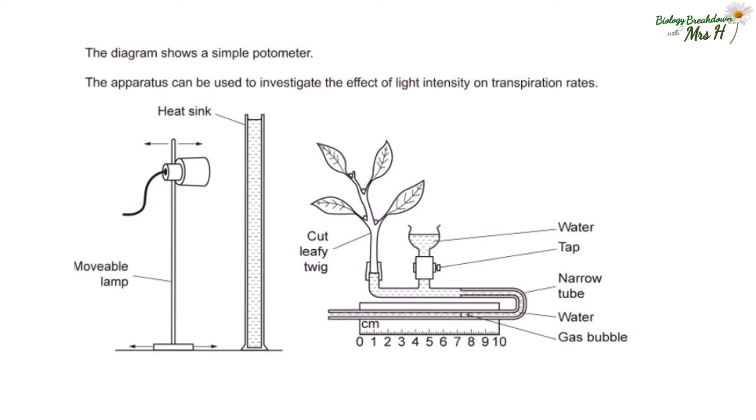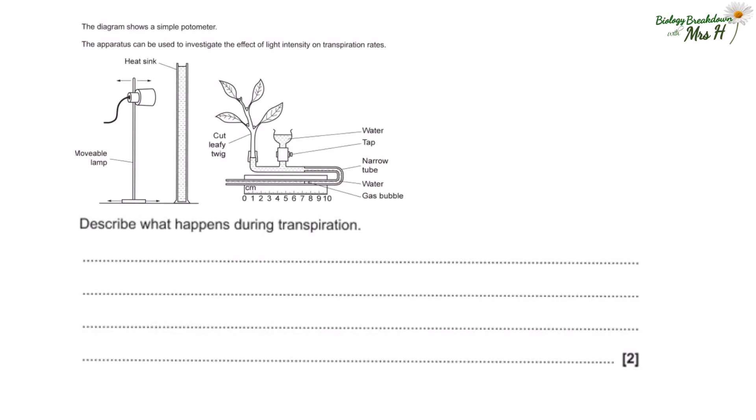Let's have a look at an exam question. The diagram shows a simple potometer. The apparatus can be used to investigate the effect of light intensity on transpiration rates. Now this could be confused with your photosynthesis required practical, but it is measuring transpiration. I haven't mentioned the heat sink before, but this is filled with water so that it can absorb heat energy from the lamp and that makes sure that the temperature doesn't affect the rate of transpiration, to make sure that light intensity is the independent variable and temperature should be a control variable.